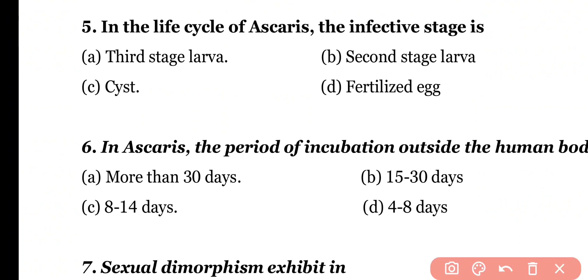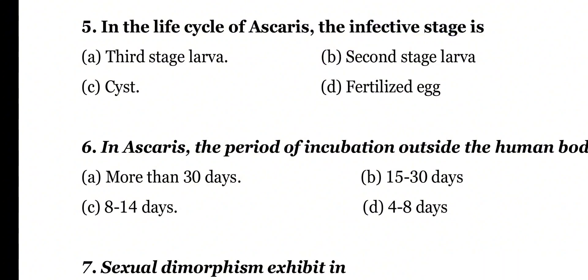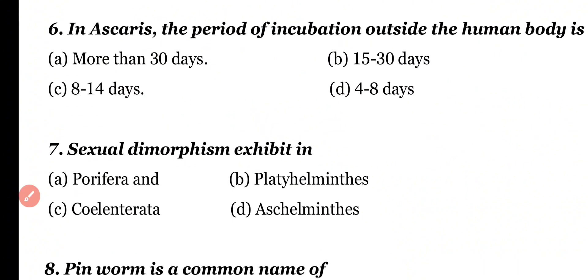Question 5: In the life cycle of Ascaris, the infective stage is the third stage larva, second stage larva, cyst, or fertilized egg. Correct answer is option B. The second stage larva, also known as the embryonated egg, is the infective stage of Ascaris.